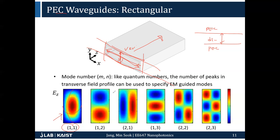From mode (1,1) you have two choices: a cosine along the longer direction but a sine — anti-symmetric, M=2 — along the vertical direction, giving mode (1,2); or a cosine along the longer direction and sine along the shorter direction, giving mode (2,1). There are many other variations like (1,3), (2,2), (2,3), and so on.